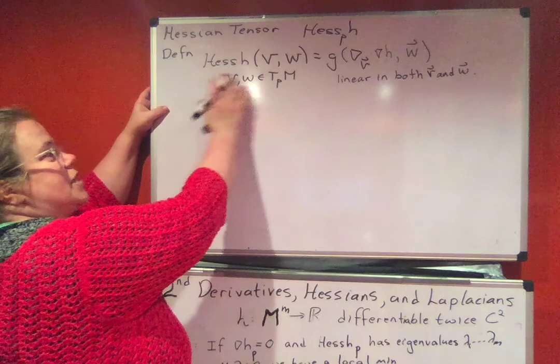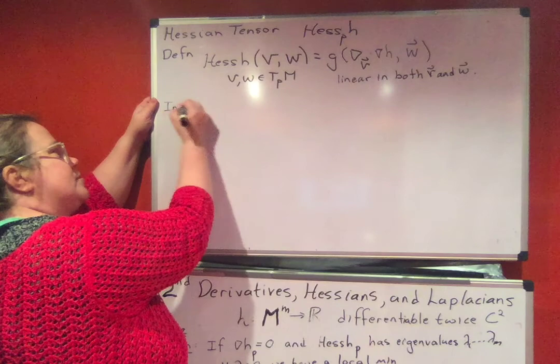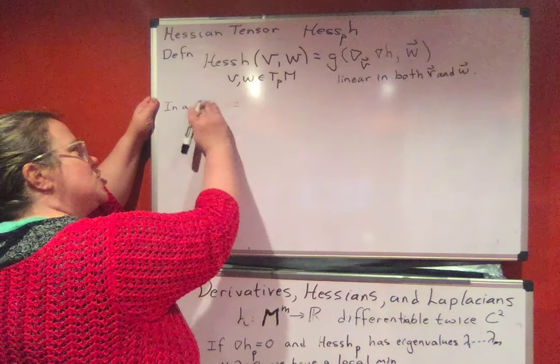So we've got this Hessian. I just moved this board up and moved the other board down. We have this Hessian defined this way and I would like to now say if you're inside in a coordinate chart. We're just in a chart, right, in a chart.